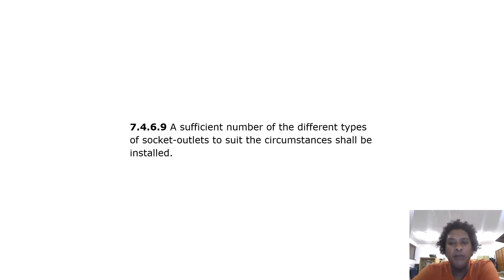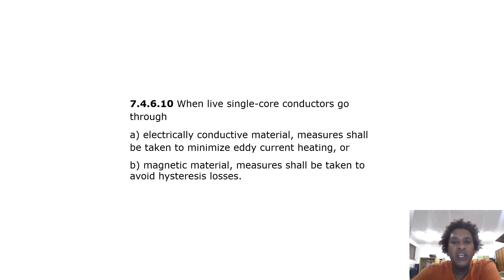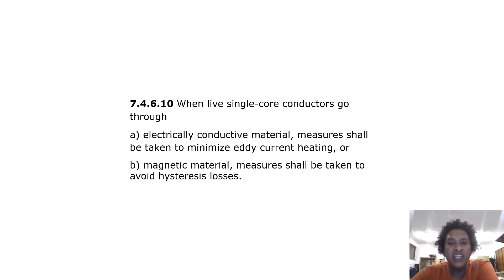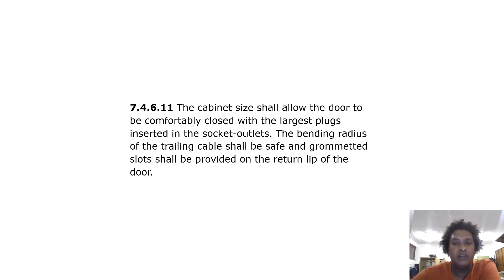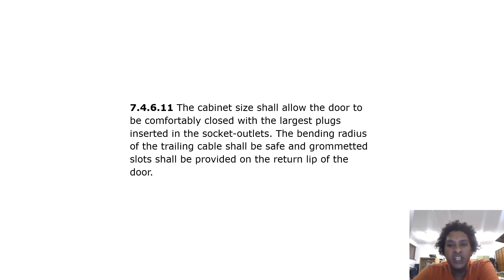A sufficient number of the different types of socket outlets to suit the circumstances shall be installed. When live single core conductors go through electrically conductive material, measures shall be taken to minimize eddy current heating, or through magnetic material, measures shall be taken to avoid hysteresis losses. The cabinet size shall allow the door to be comfortably closed with the largest plugs inserted in the socket outlets. The bending radius of the trailing cable shall be safe and grommeted. Slots shall be provided on the return lip of the door.